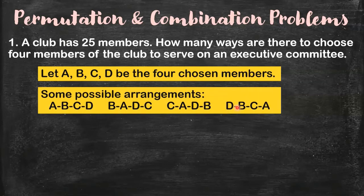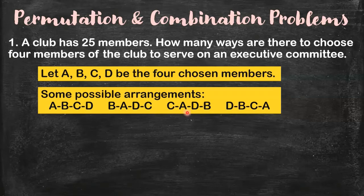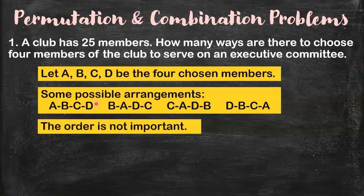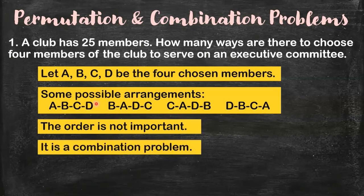Let me show some possible arrangements. Person A, then B, then C, then D — that's one arrangement. Or person B, then A, then D, then C — that's another valid arrangement. No matter what order we choose them, kahit sino yung unang piliin, sila pa rin yung apat — it's still persons A, B, C, and D on the committee. So obviously, the order here is not important.